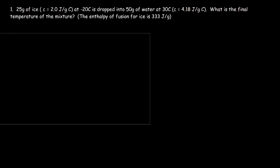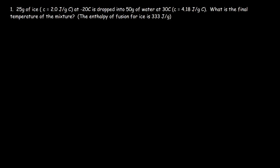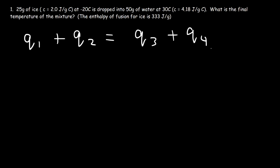If only some of the ice melts, then we need Q1, which represents the energy required to heat up ice from negative 20 to 0; Q2, the energy required to melt some of the ice; and Q3, the energy released as water cools down. Q4, as some of the water probably freezes into ice, you probably don't need, because if Q2 represents the melting of ice, then water is just going to stop at zero degrees Celsius. So this is the equation we need if some of the ice melts, but not all of it.